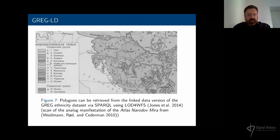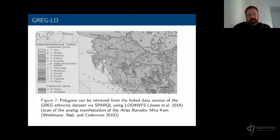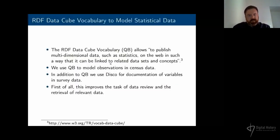Here is a look at the analog manifestation of the Atlas Narodov Mira. There were some issues on our virtual machines with the linked open data web feature service not running again. I have just some polygons from the digitized analog atlas, but of course you could retrieve all these polygons and merge them as an overlay map with other maps.